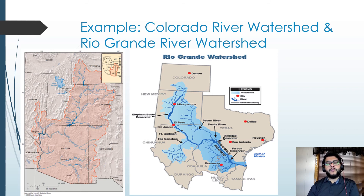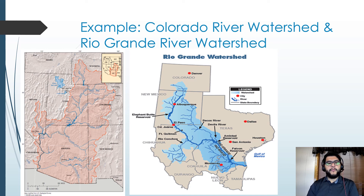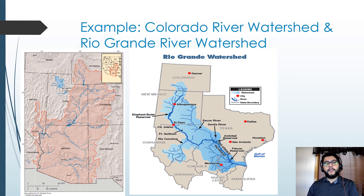Depending on the tributaries and the topography, drainage can go different ways. Humans also play a big role in how these watersheds function — along these rivers they may have dams, man-made canals, and gullies that have pushed water out, which may determine whether or not that water even drains. For example, down in the Gulf of Mexico, sometimes the Rio Grande River does not connect all the way to the Gulf — because of drought, it may not reach that point.